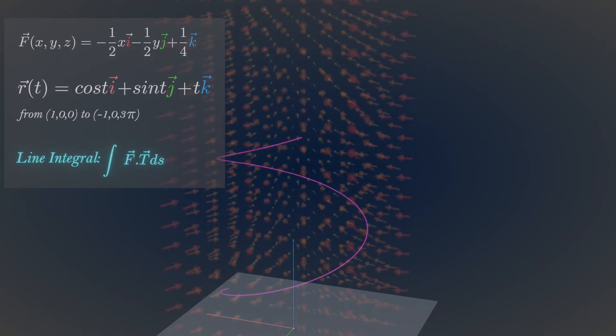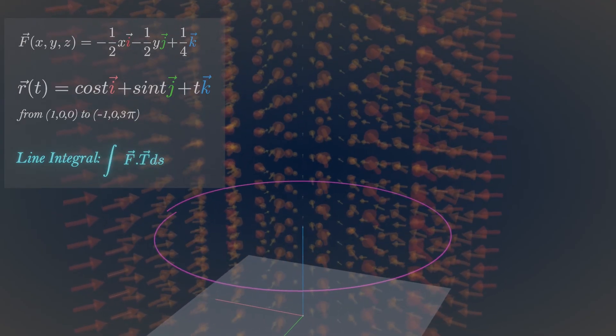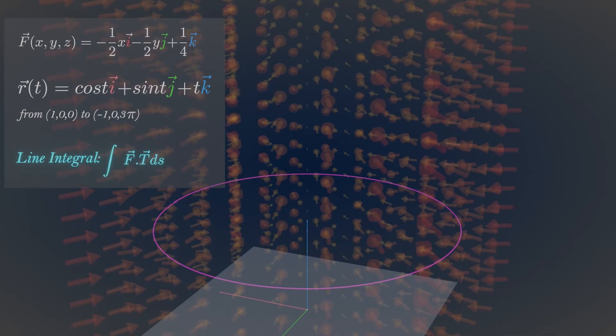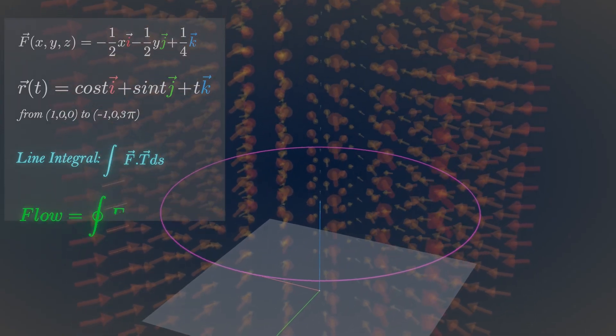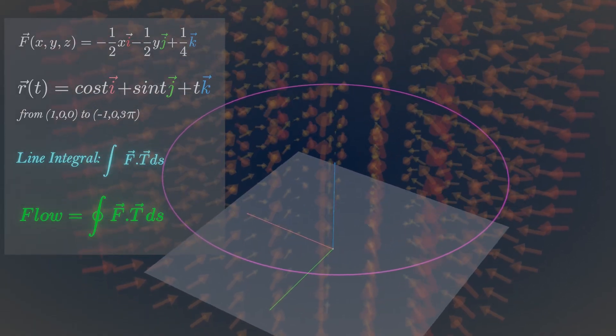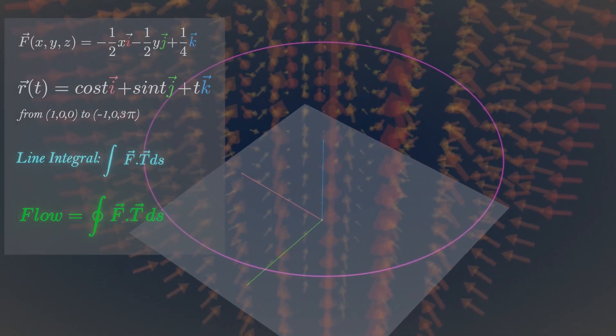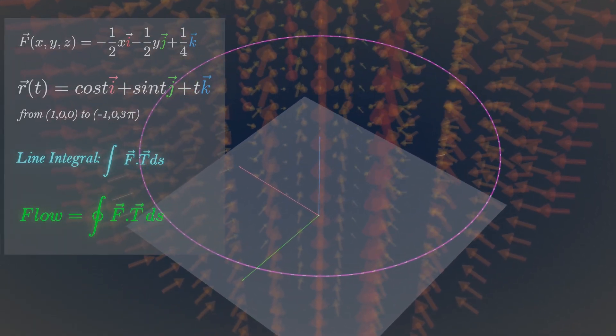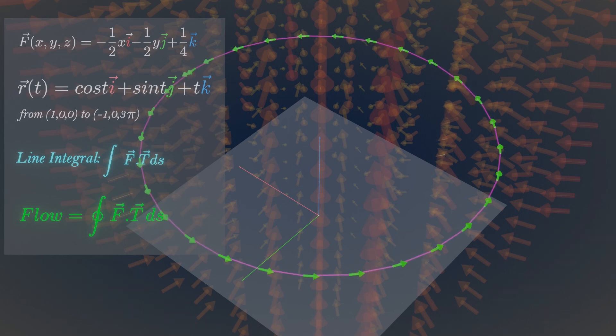When a curve starts and ends at the same point, it is a closed curve or loop. Now let's suppose that this field represents a velocity field. Under these circumstances, the integral of velocity vectors and unit tangent vectors along a curve in the region gives the circulation around the curve. This is for a 2D curve.